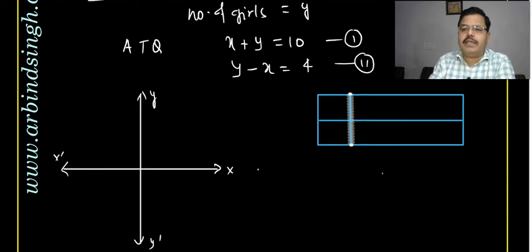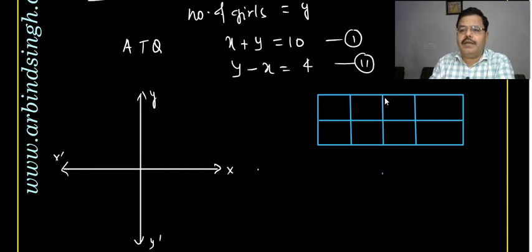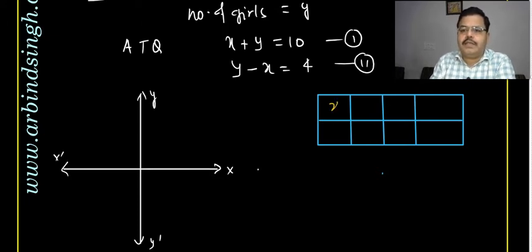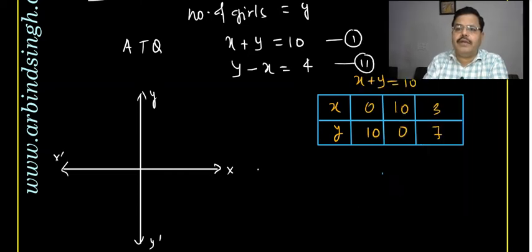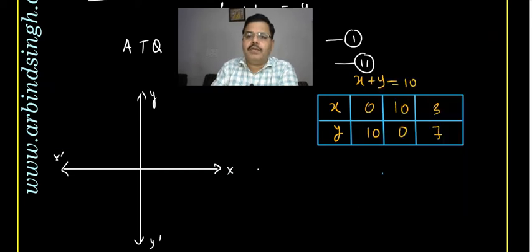If you find the point of intersection on the x-axis and y-axis, there is no need to take any other value. For x plus y equals 10: if x equals 0, y is 10; if x equals 10, y is 0; if x equals 3, y equals 7. So the three values we can plot are (0,10), (10,0), and (3,7).